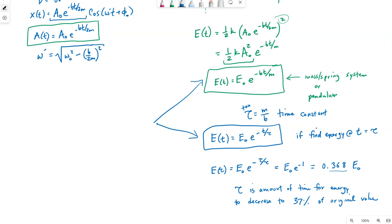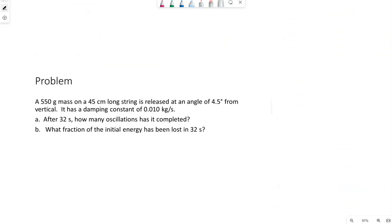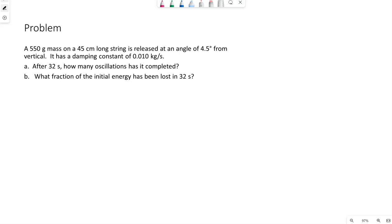So let's do an example. So I've copied a problem in here. A 550 gram mass on a 45 centimeter long string is released at an angle of 4.5 degrees from vertical. It has a damping constant of 0.01 kilograms per second. After 32 seconds, how many oscillations has it completed? And then part b, what fraction of the initial energy has been lost in 32 seconds? Okay, so we have this pendulum. This would be considered a simple pendulum because the mass is at the end of the string. It is safe to assume that the string has negligible mass in comparison to the 550 grams at the end. So simple pendulum.